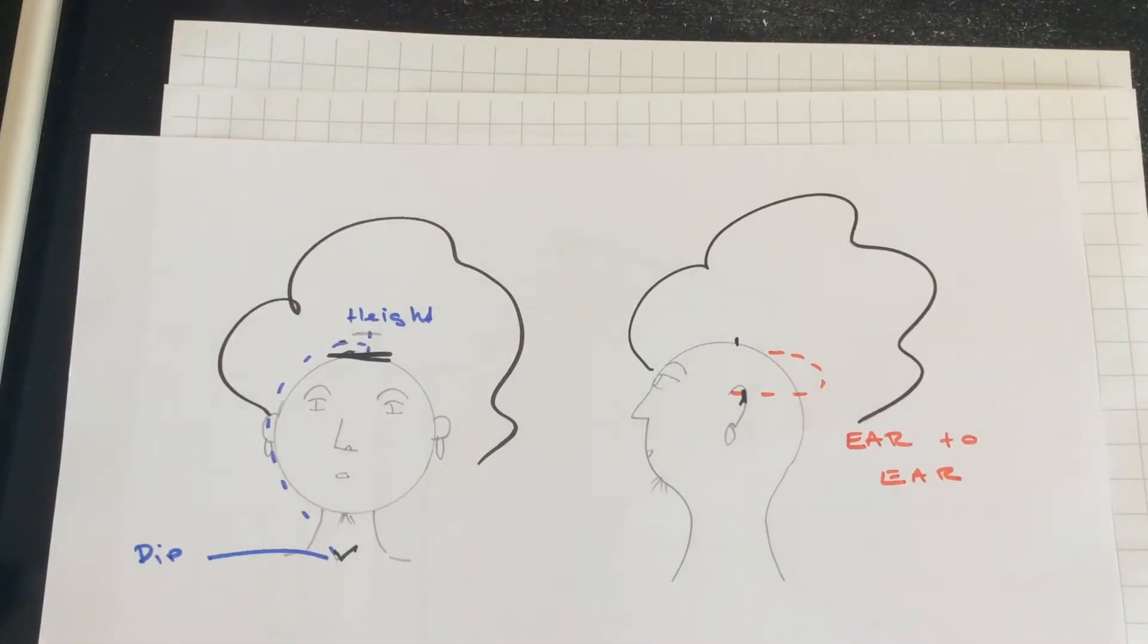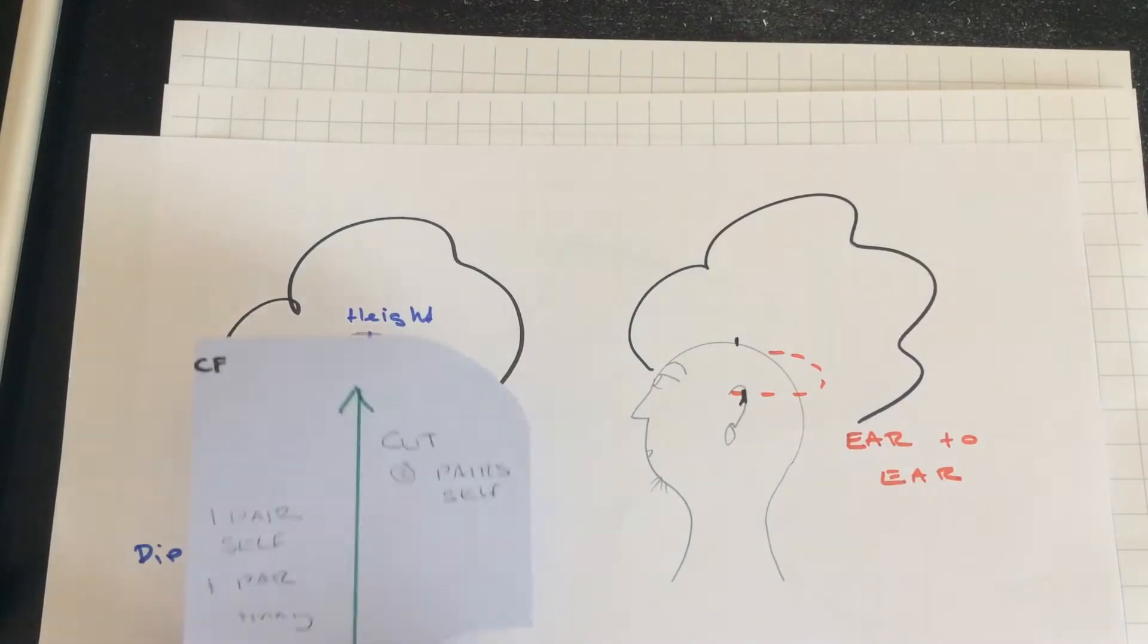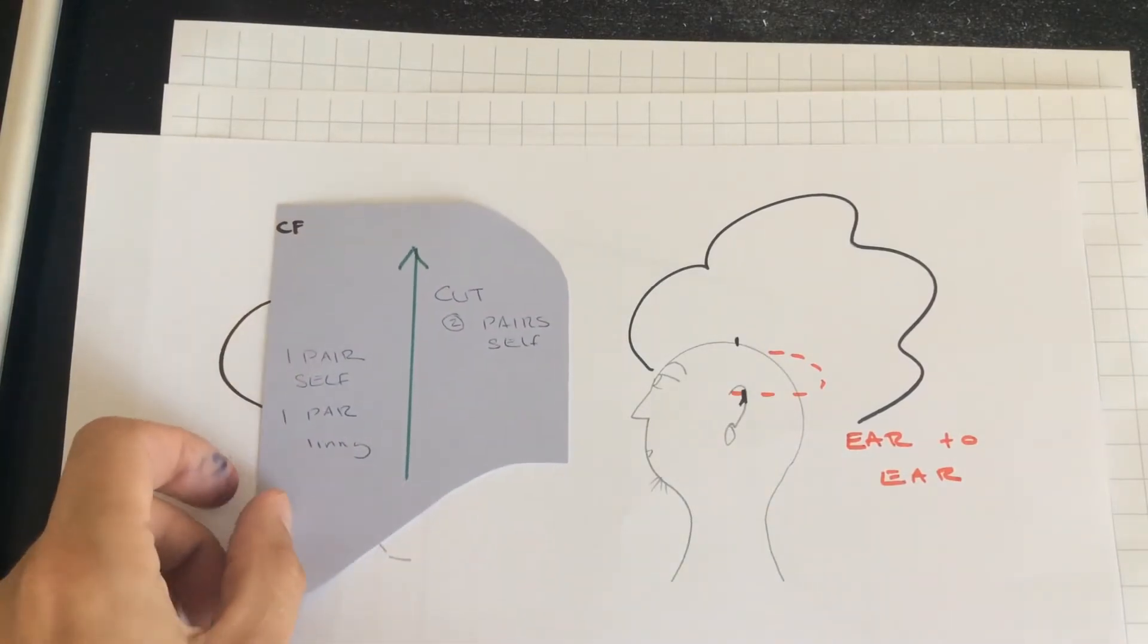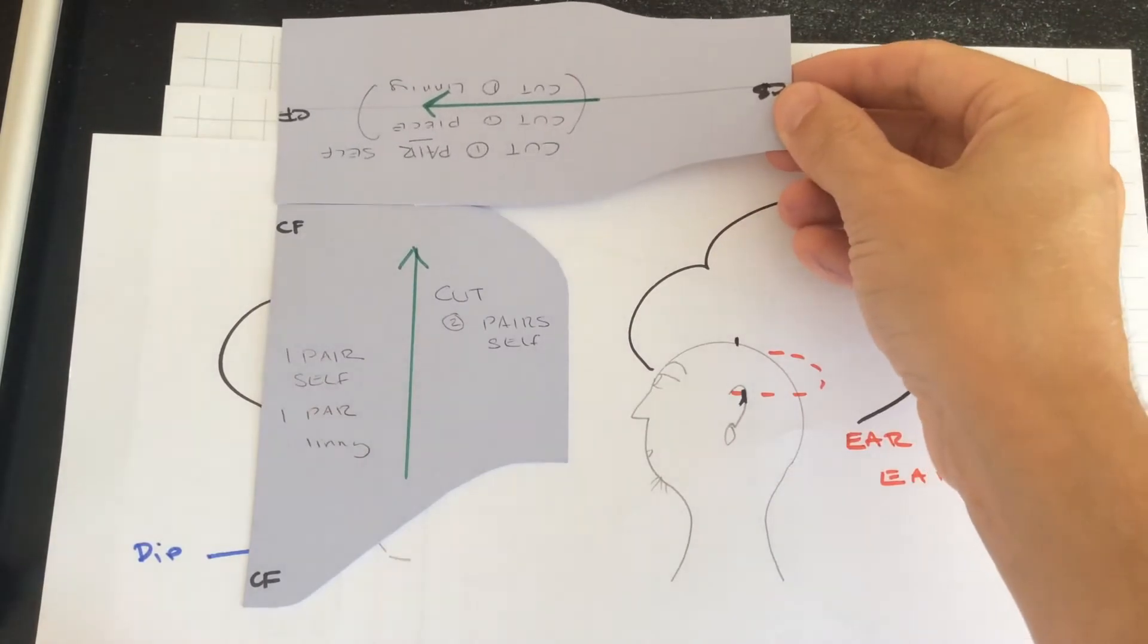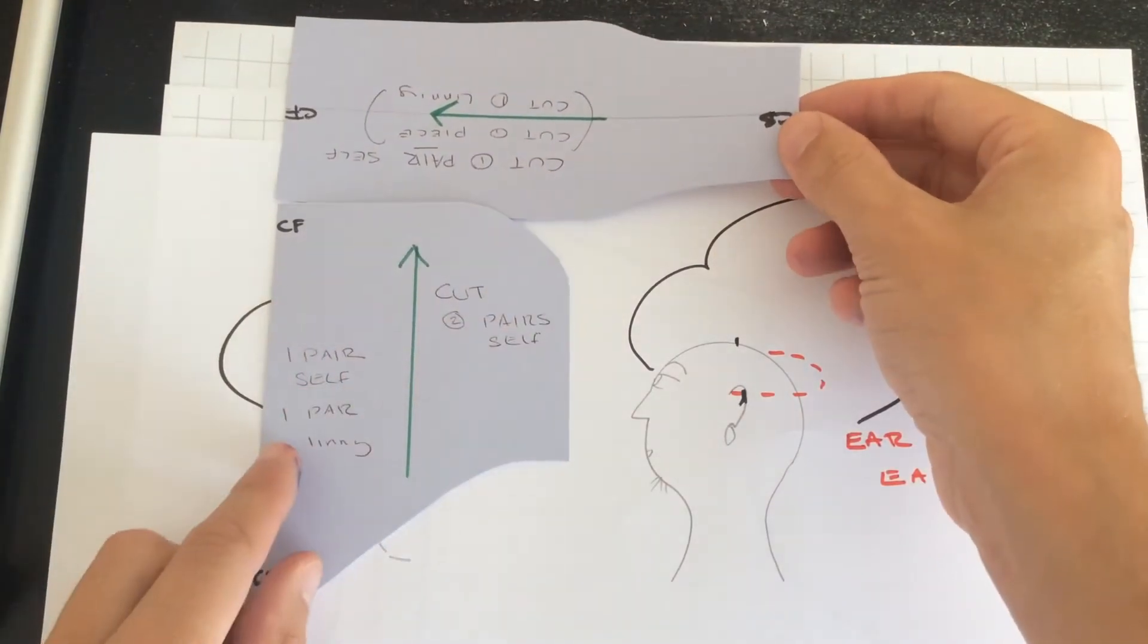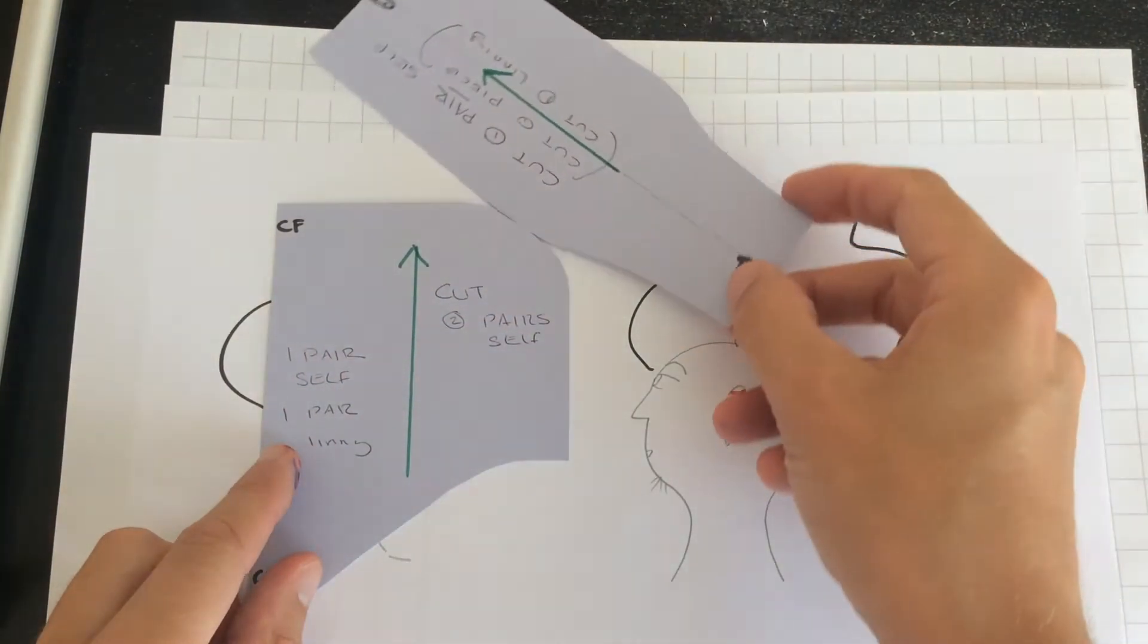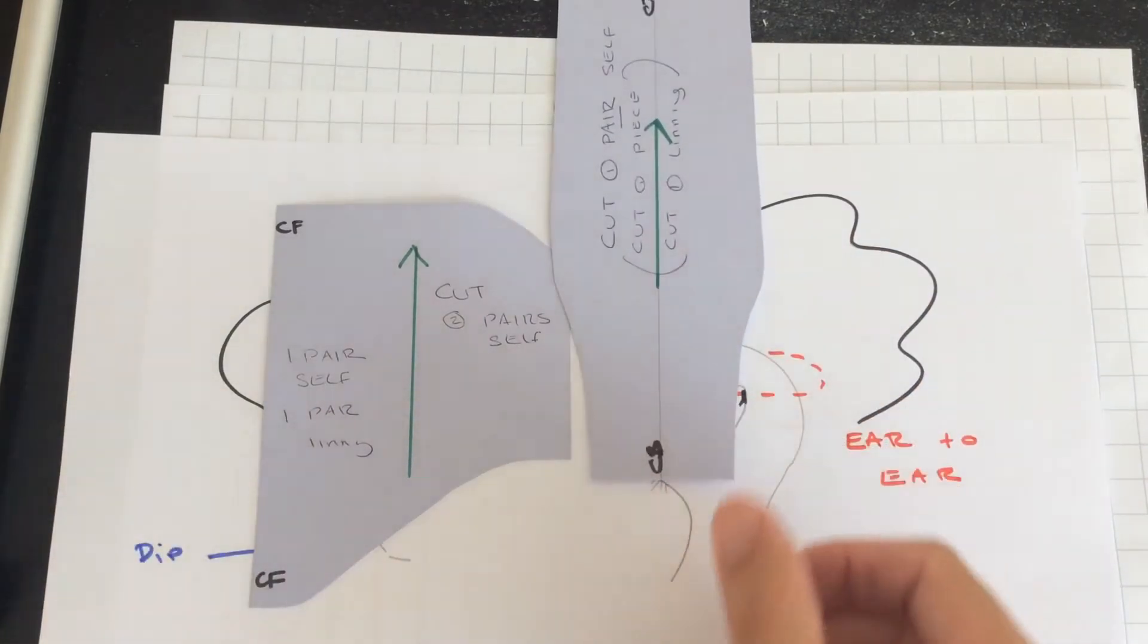We are going to look at a hood that's made up of two main pattern pieces. There could be additional things like ribbing, channels that you might want to create for it as you adapt it, or facings, but the main pattern piece is this piece and then this panel that is sewn along this seam here and down to the back to create more fit.